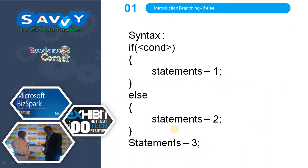The if-else statement syntax indicates: if the condition is true, then statements 1 and statements 3 are executed. If the condition is false, then statements 2 and statements 3 are executed. In a simple 'if', only when the condition is true will the statements be executed. In if-else, if the condition is true some statements execute; if false, other statements execute. There is no additional condition for the else part.